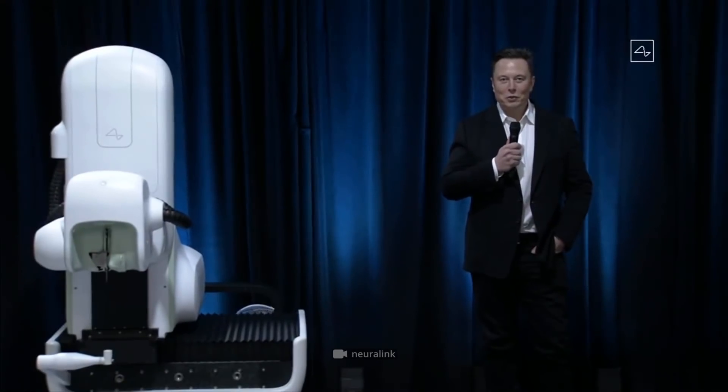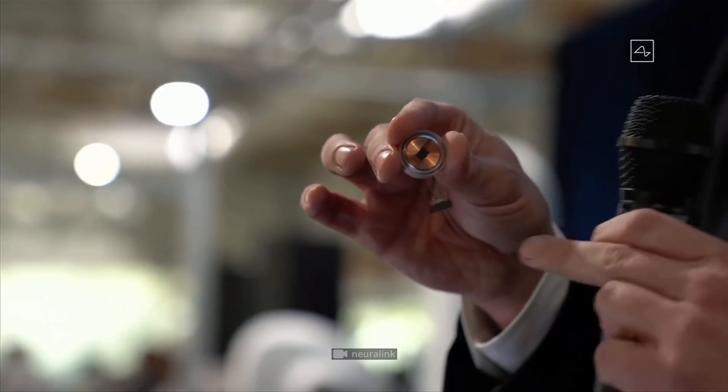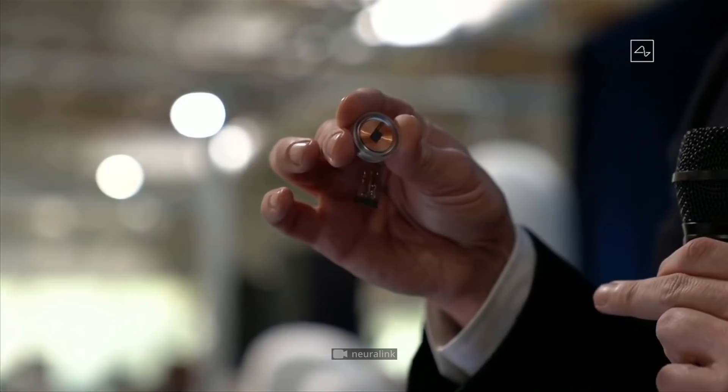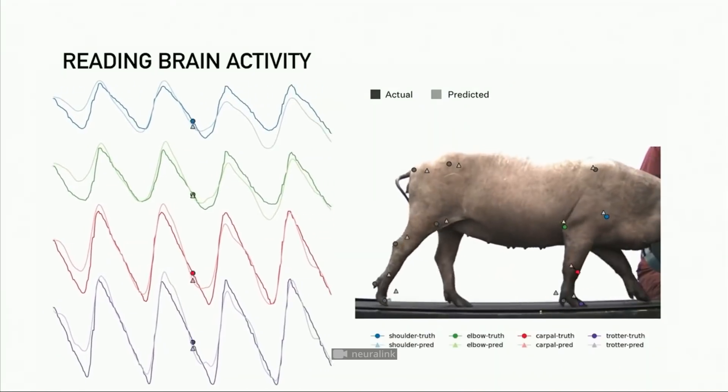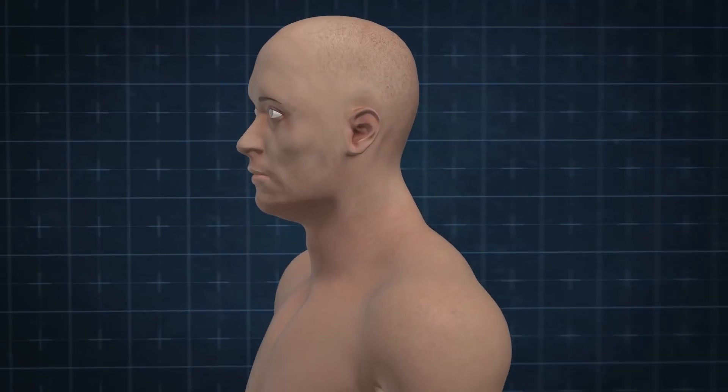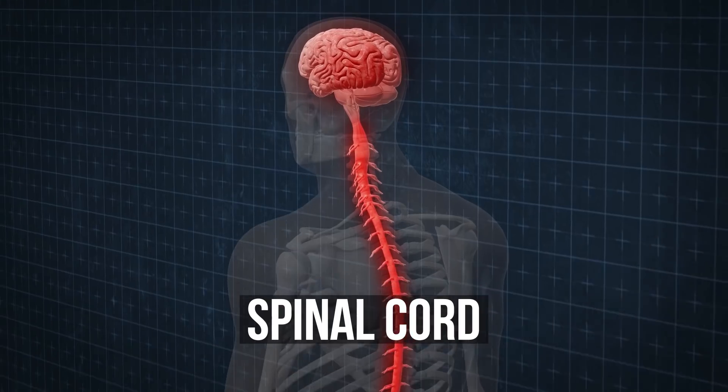It was announced at a recent conference by Elon Musk that a chip developed by his company Neuralink was successfully implanted into a pig's brain without harm to its health. According to Musk, this development will help people suffering from disorders of the brain or spinal cord.